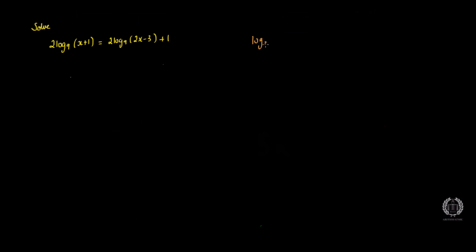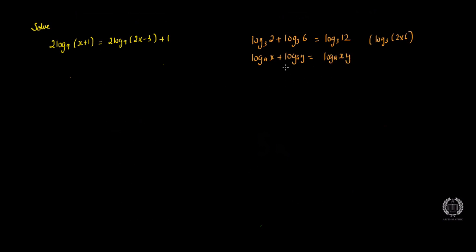Say for example you have log₃2 plus log₃6. What you can do — when you have a plus — is times the two by six, so you just get log₃12. What you're essentially doing is log₃(2×6). This is called the multiplication law: when the bases are the same and you're adding, you multiply the two numbers. Formally: log_a(x) + log_a(y) = log_a(xy).